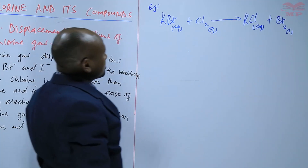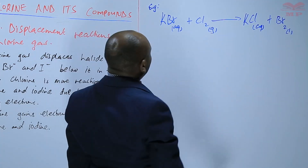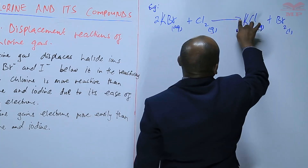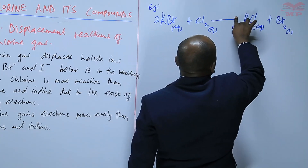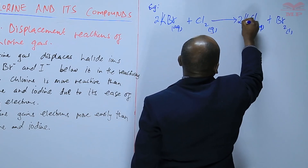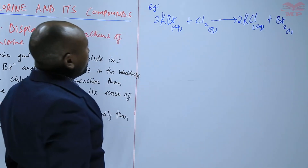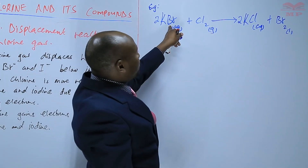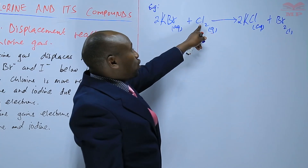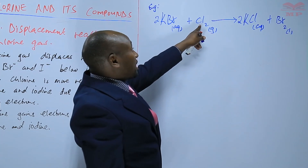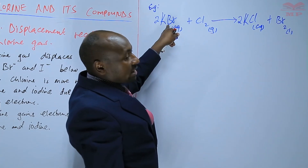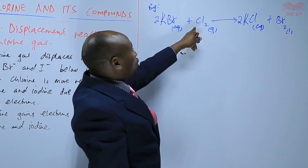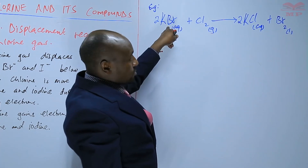So that's a displacement reaction. To balance it, put a 2 there and a 2 there. Basically, the bromide ions have been displaced by chlorine — their position has been taken by chlorine — and that is because chlorine is more reactive than bromine.